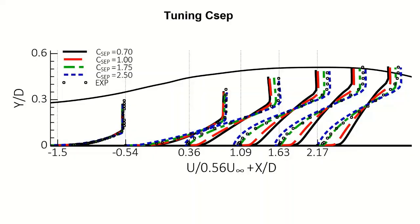For example, looking at the effect of varying CSEP on the velocity profile of a diffuser, CSEP equal to 1.75, the default shown here in green, fits experimental data very well while reasonably predicting the separation of the flow.